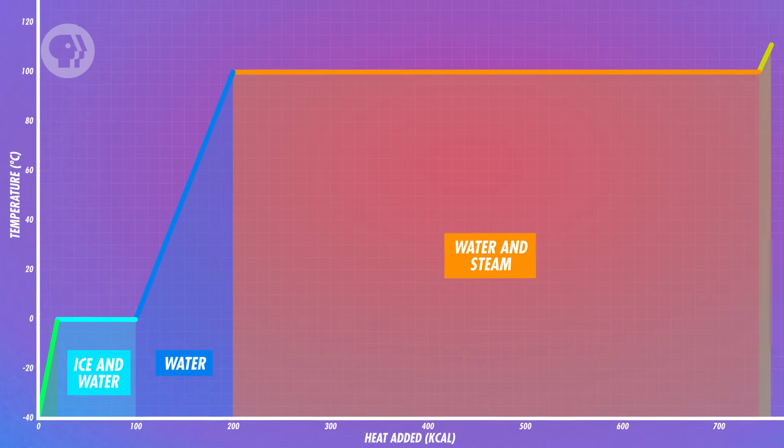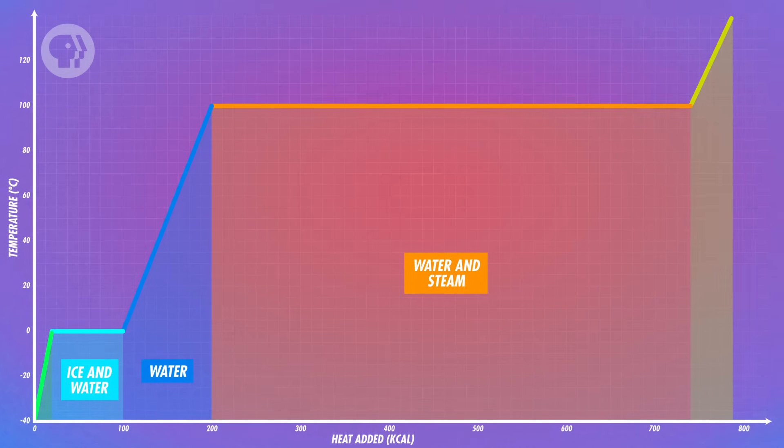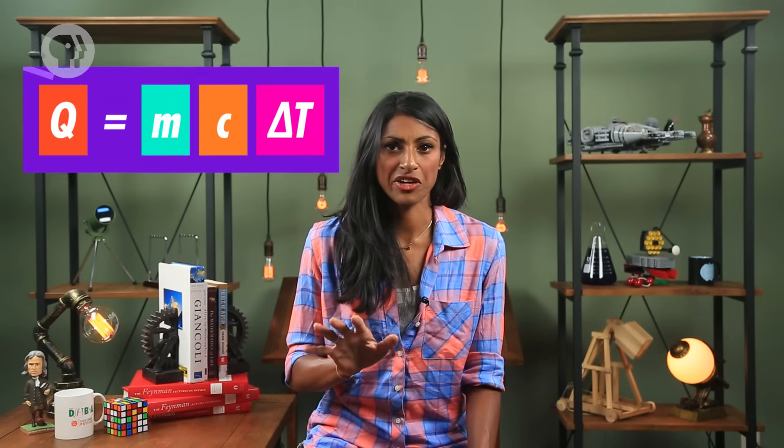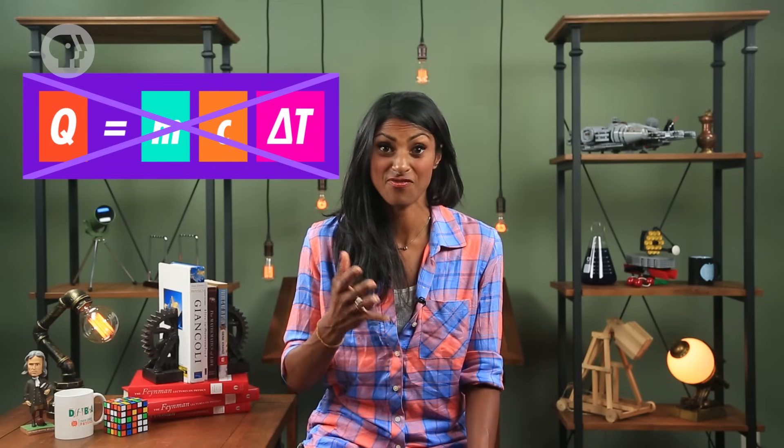When all the water has been converted to steam, adding more heat will make the temperature rise once more. So we don't use that earlier equation to describe the heat transfer while a substance's phase is changing.